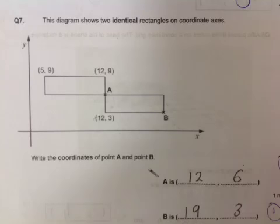For this one, this diagram again shows two identical rectangles. And the fact that it's bold there suggests that that's important. We write the coordinates of point A and point B.